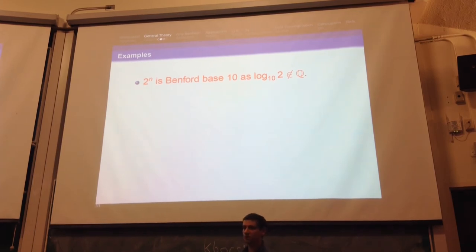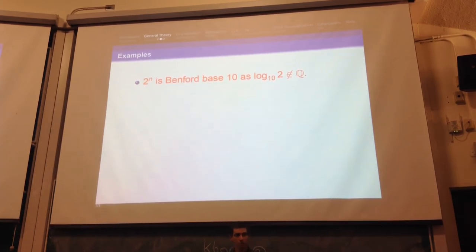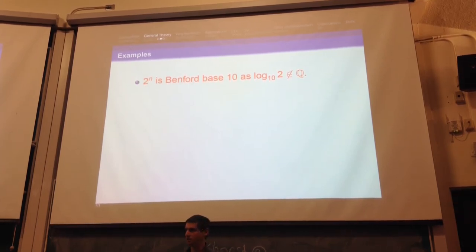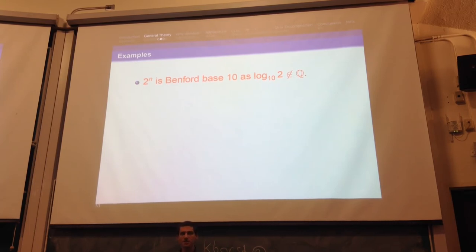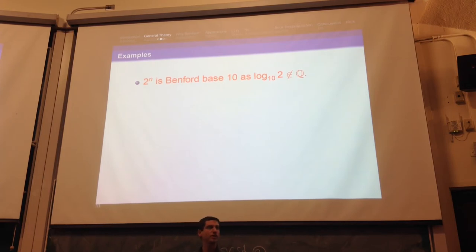Let's give some examples of Benfordness. 2 to the n is Benford, and the proof is very simple. We showed that log of 2 base 10 is irrational, so n times log of 2 base 10 is equidistributed. And we know that if a sequence is equidistributed, when we exponentiate it we get Benford. So 2 to the n is Benford.